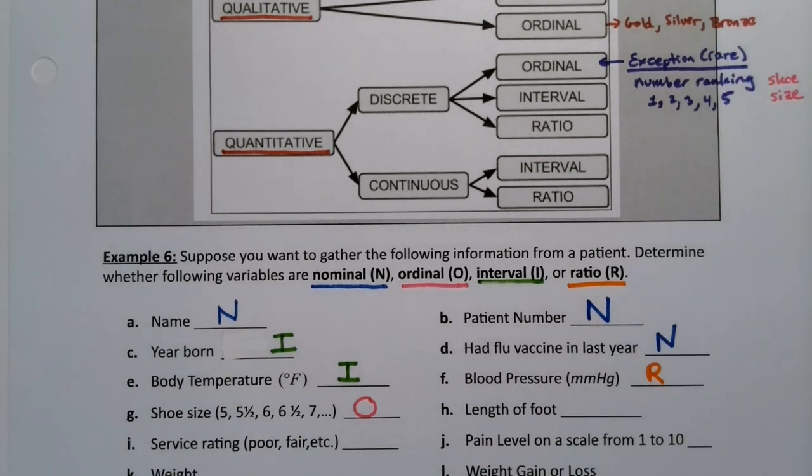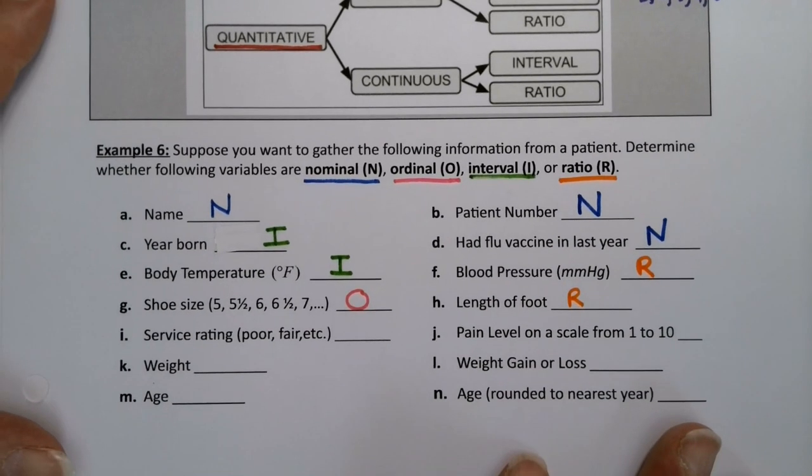Now the length of foot, that's a whole other thing. The length of your foot is something you measure with inches and so on. You obviously cannot have a negative length of foot that doesn't exist. So that means that that's ratio, because negative is impossible.